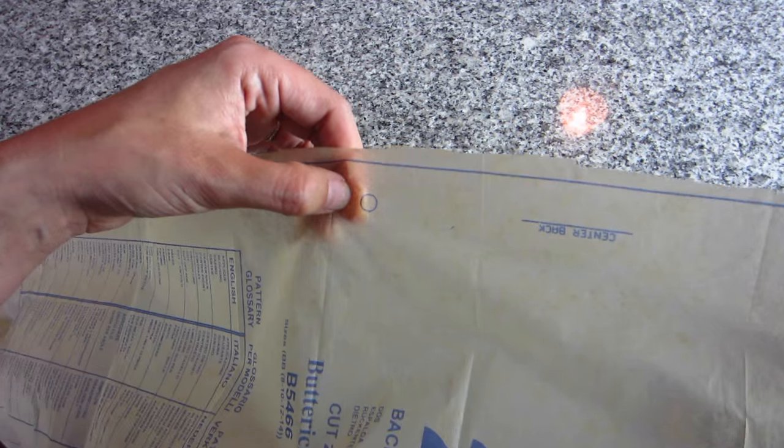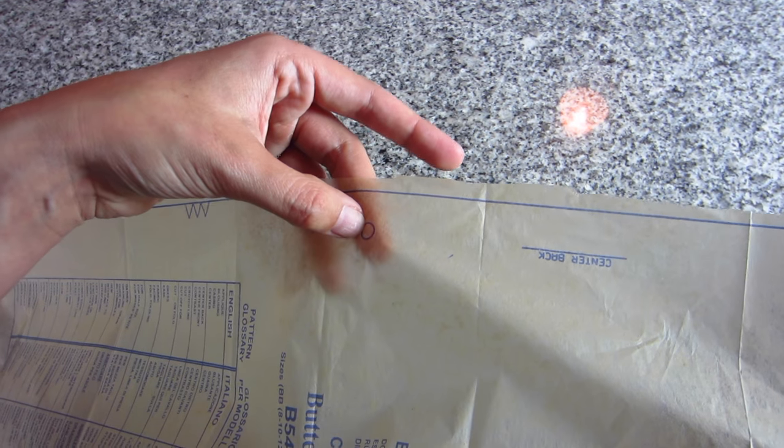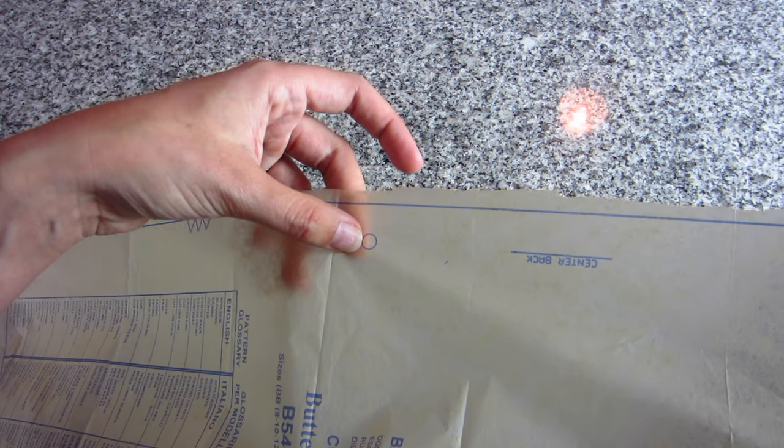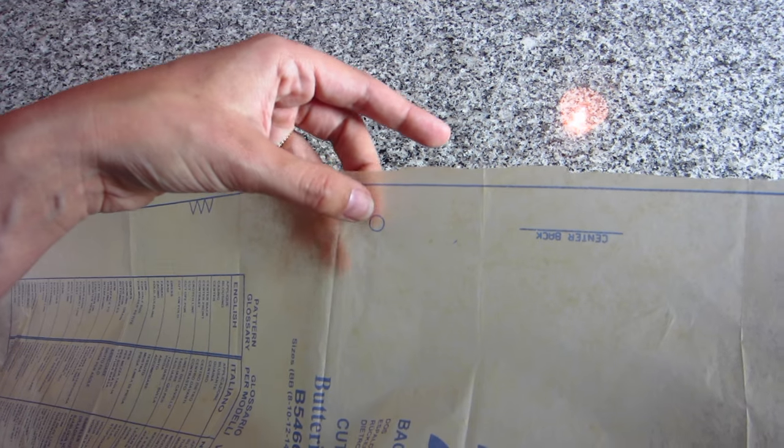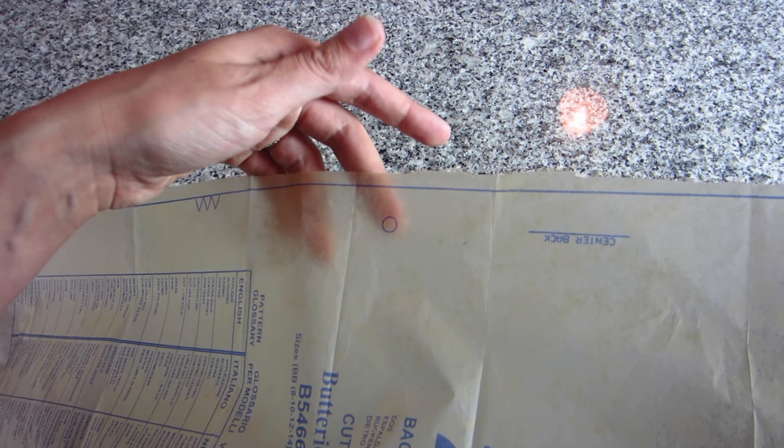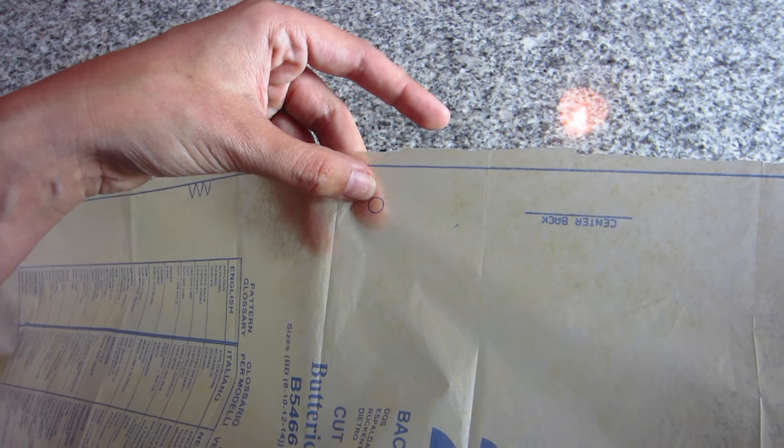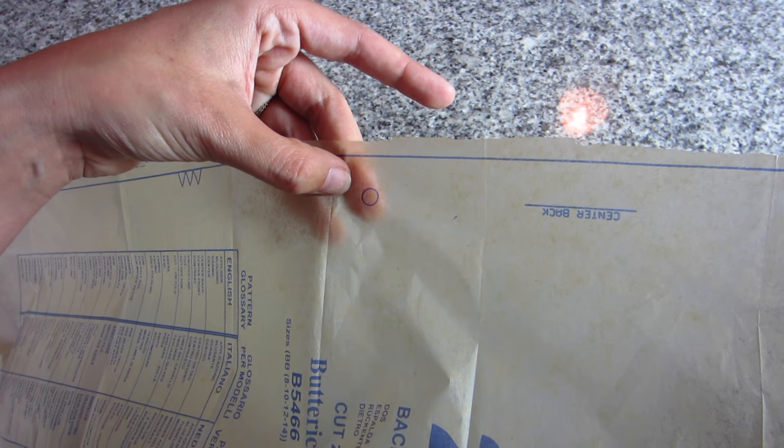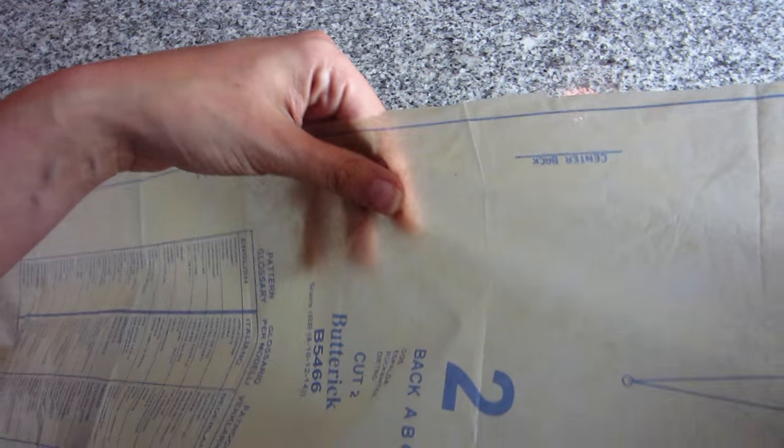Now it does have this circle, and I know just from experience this is the marking for where the zipper stops. But you need to kind of point these out in your mind or even highlight them or whatever you need to do to remember that they are there, so you don't forget to transfer them to your fabric whenever we get that out next.